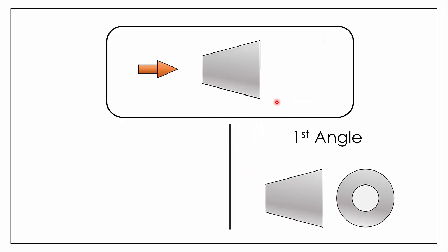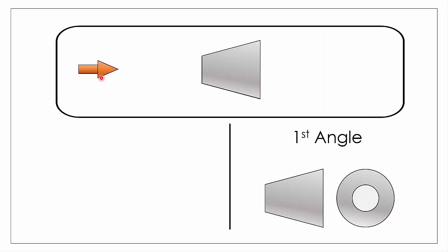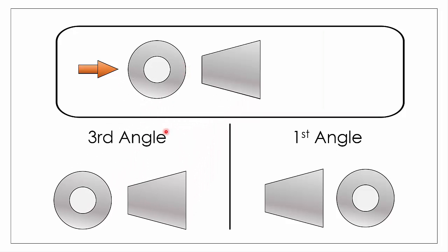Likewise for third angle projection, if we're looking in from the left hand side of our object, our end view is going to appear on the left hand side. So that's going to form the basis of our third angle projection.